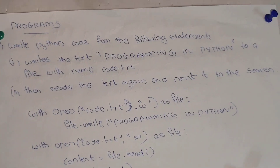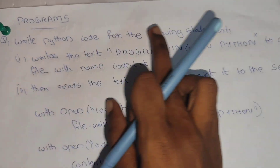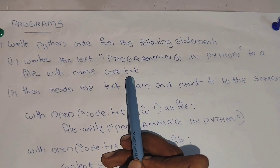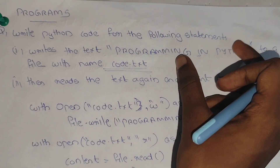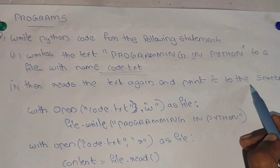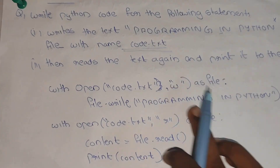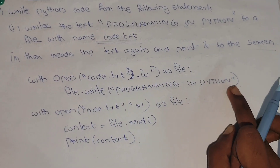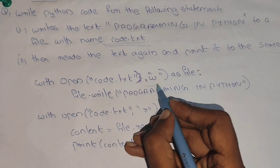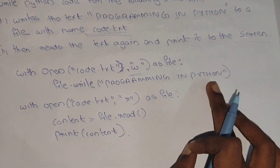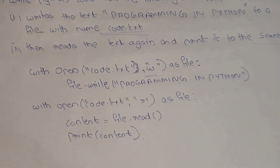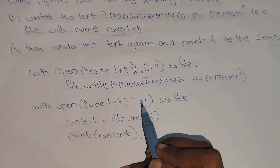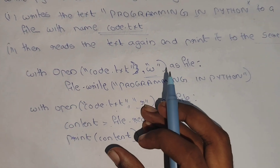Next, we are going to do the program for Module 2. Write the Python code to write the text 'Programming in Python' to a file named Code.txt. When the file is open, you can write to it. To read it back, use: with open('code.txt', 'r') as file: file_content = file.read(); print(content). You can print the content to the window or screen.